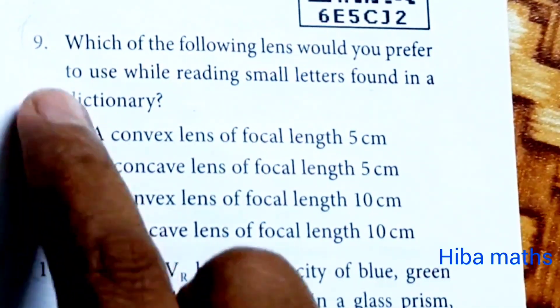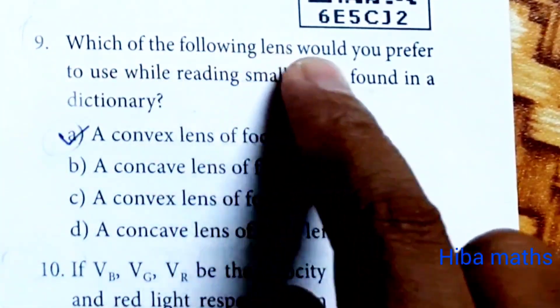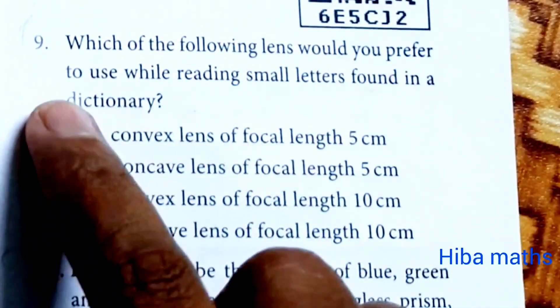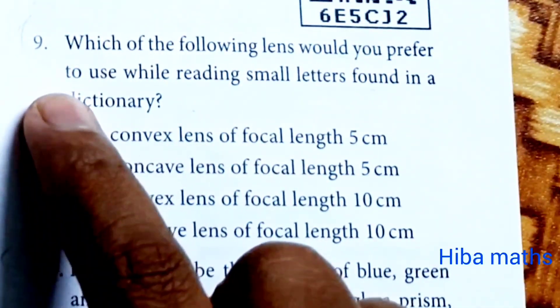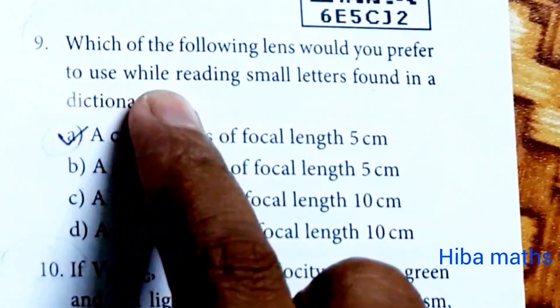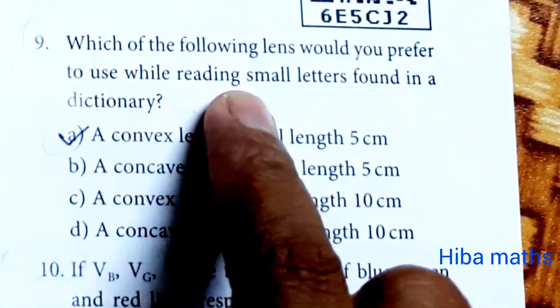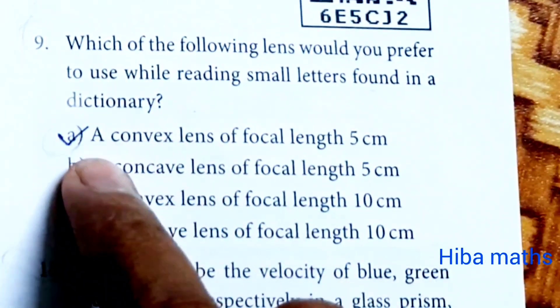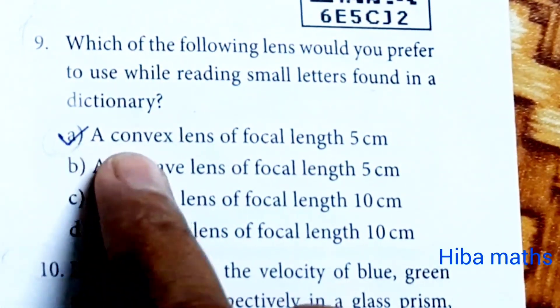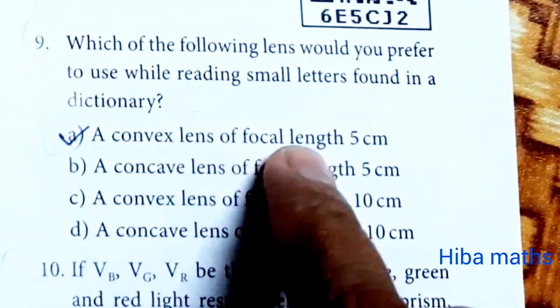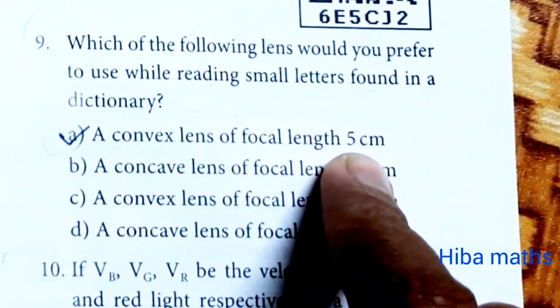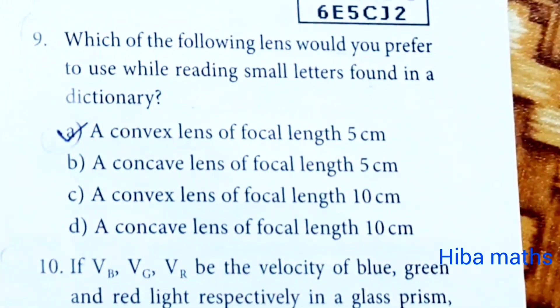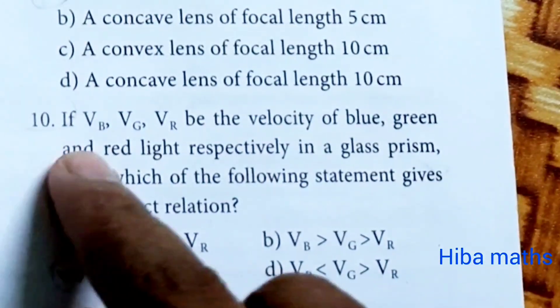Eighth question: the eye defect presbyopia can be corrected by a bifocal lens. Ninth question: which of the following lens would you prefer to use while reading small letters found in a dictionary? A convex lens of focal length 5 cm.